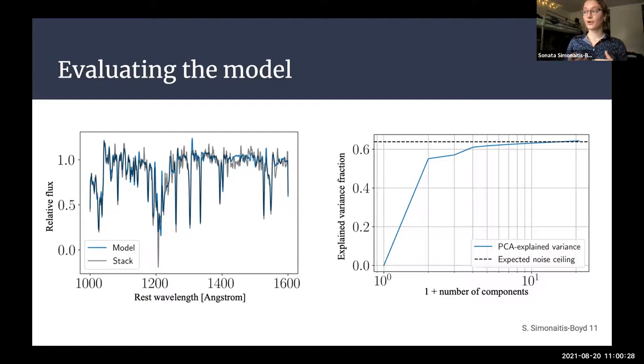But we can also do a quantitative analysis. What I have here on the right is a plot of the explained variance fraction. Essentially, what this tells us is that if this blue line ever goes above this black dotted line, then that component at that point is plotting noise. So, we really want to stay below that line. It's our ceiling. As it turns out, with four components, 96% of the variance not due to noise is explained by the model. So, that's a pretty accurate model. So, what this tells us is that our model can accurately model the variation we see in the LATIS galaxy spectra.